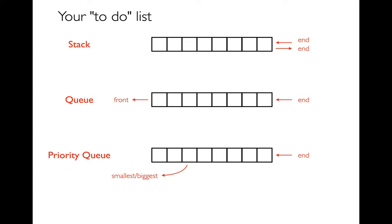Starting in the middle: we can use our to-do list as a queue. In a queue, new jobs are added to the end and work is pulled off the beginning — just like a checkout queue at a grocery store. You join the end, wait, eventually reach the front, and do your task. When we use a queue like that, we get breadth-first search. This is also called FIFO — first in, first out.